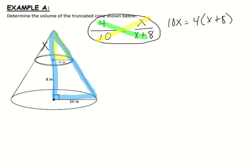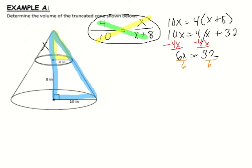From here, you have multiplication with parentheses. So multiply 4 times x, 4 times 8. You're going to have 4x plus 32. Solve this equation. Subtract 4x from both sides. 10x minus 4x is 6x. The 4x is cancelled. Bring down your 32. And then divide both sides by 6. Doing so results in x is equal to 5 and a third.